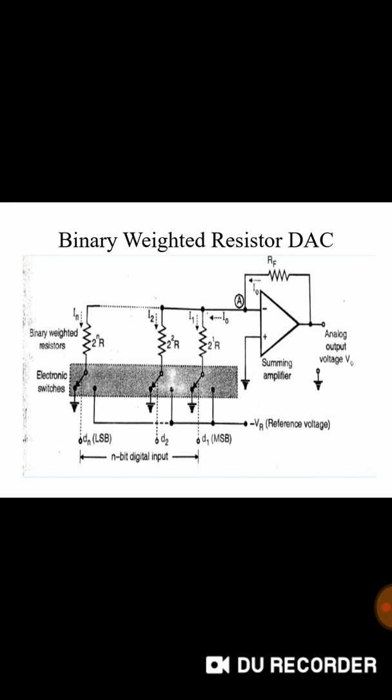The first is binary weighted register DAC. To the inverting terminal we have connected various resistances through binary weighted resistance brackets, non-inverting terminal is connected to ground directly. A reference voltage has been applied to MSB, LSB and N bit digital input signals. Depending on the values 1 and 0's or reference voltage or 0's this electronic switch is used to connect value of resistance and voltage.